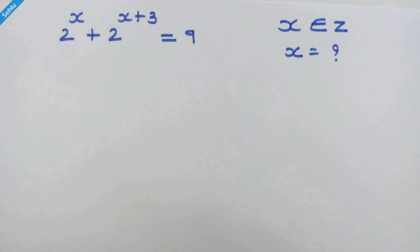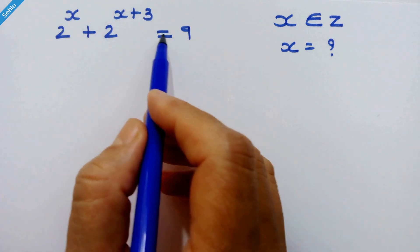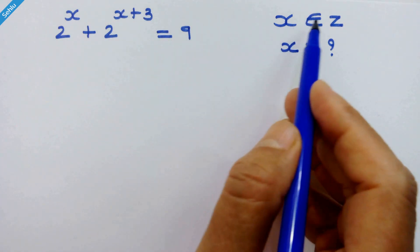Hey guys, what we have here is 2 raised to x plus 2 raised to x plus 3 is equal to 9, where x is an integer.